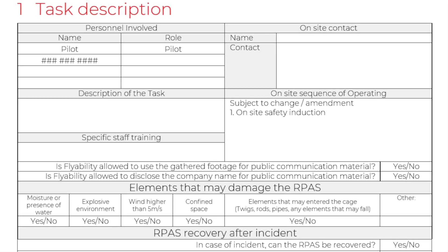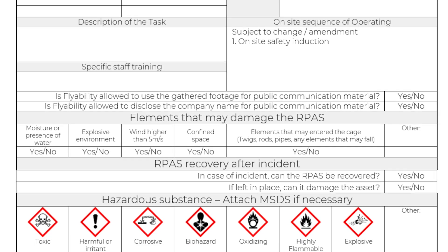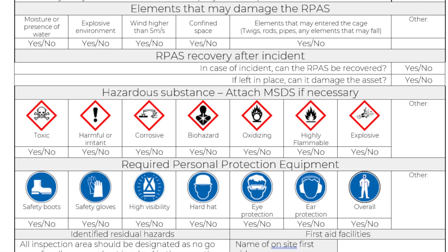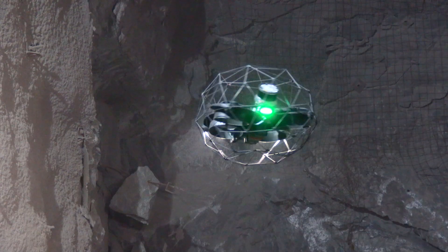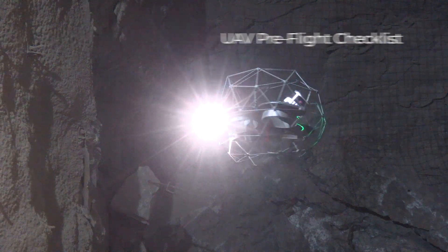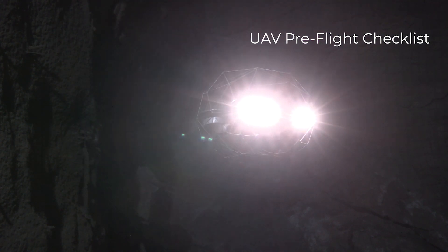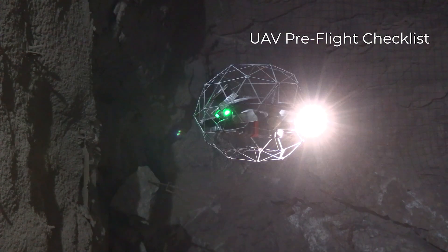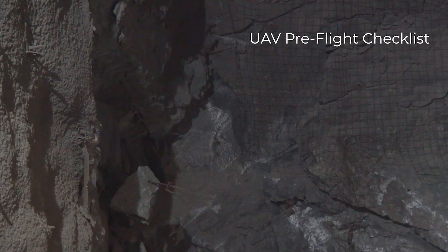The method statement is a document that describes the objective of the inspection, the criteria of success, and the output format of the inspection. The UAV pre-flight checklist is the checklist you should go through before flying the drone to make sure the UAV is in the best flying condition possible.